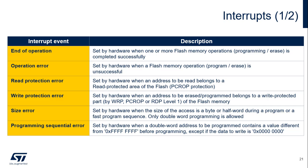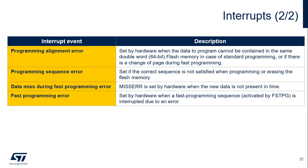The flash memory controller supports many interrupt sources. An interrupt can be asserted upon successful end of operation, or when an error occurs during a program or erase operation. Protection violations can also cause interrupts. A size error occurs when the data to be programmed is not word aligned. A programming sequential error occurs when a program operation is attempted without having previously erased the location in flash memory. A programming alignment error occurs when a complete double word isn't provided before initiating a standard program operation, or when a complete row is not written before initiating a fast programming operation. A data misprogramming error occurs when data isn't written in time during a fast programming sequence.